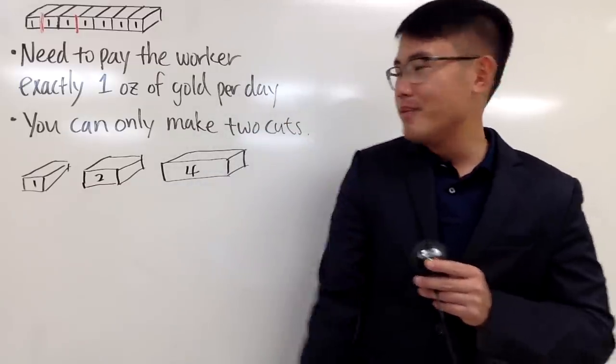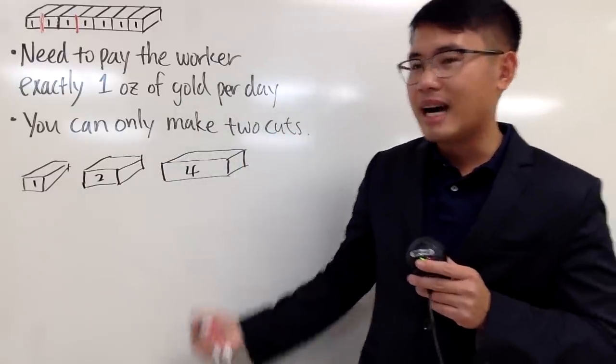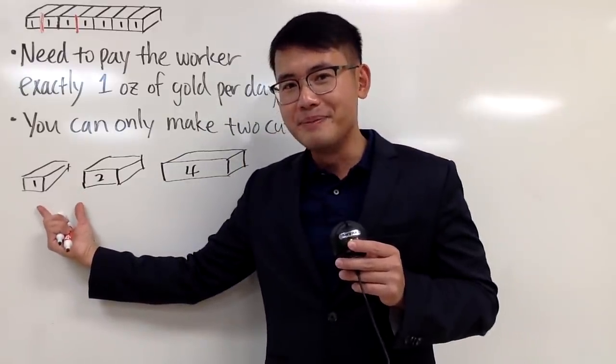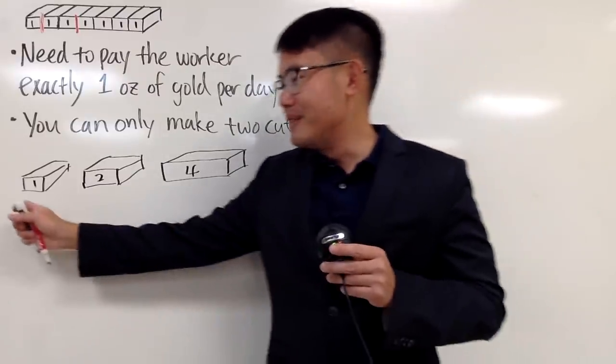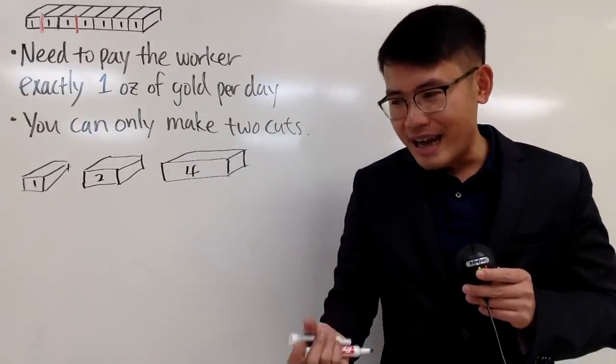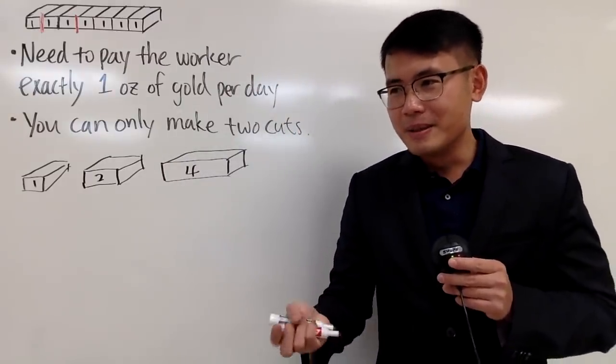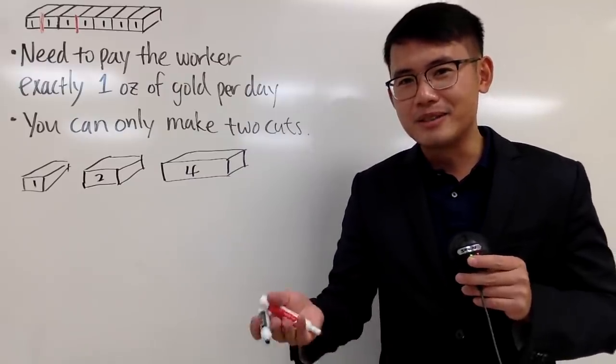And this is how you are going to do it. Pay the worker this right here the first day. And then the next day, you are going to give this to him and ask for this back. And then 2 minus 1 is, of course, 1. And you have this. On the third day, give him this. On the fourth day, give him this. And so, you can ask for it back. That's pretty much it. I don't know if you think this is not fair or not, but this is how the story goes.